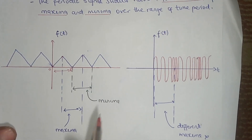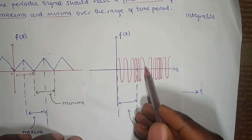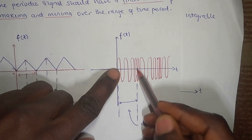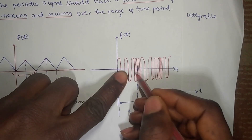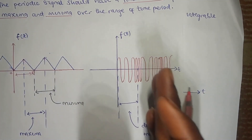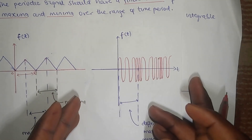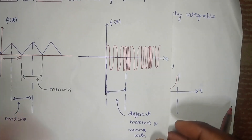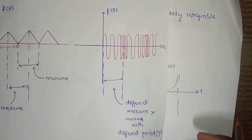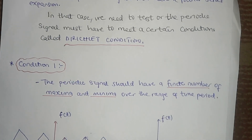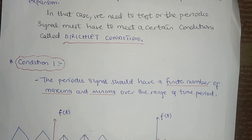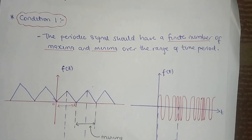Looking at this other signal, we can see that it is varying and not constant. Let's assume this is a whole time period — the maximum and minimum over the range is changing; it is not finite. It tends to infinity if you look at the signal. That means there are different maxima and minima at different period T. For the signal to meet the Dirichlet condition, it must have a finite number of maxima and minima.